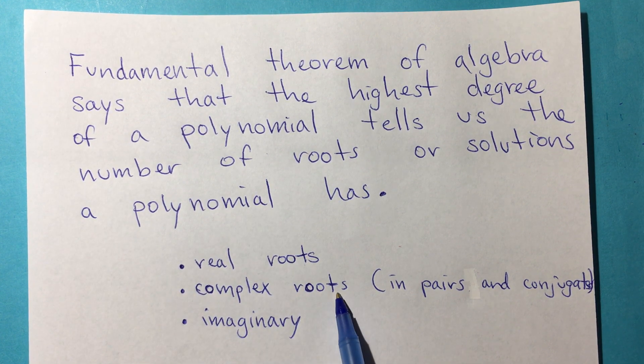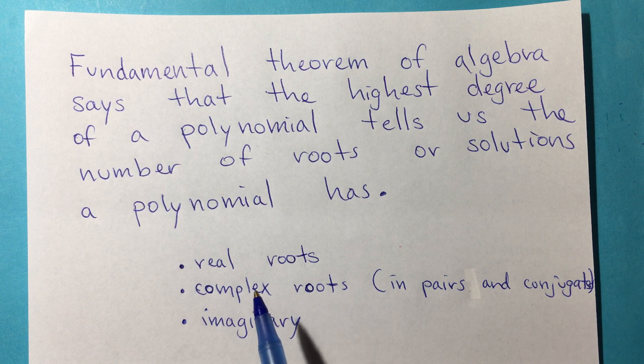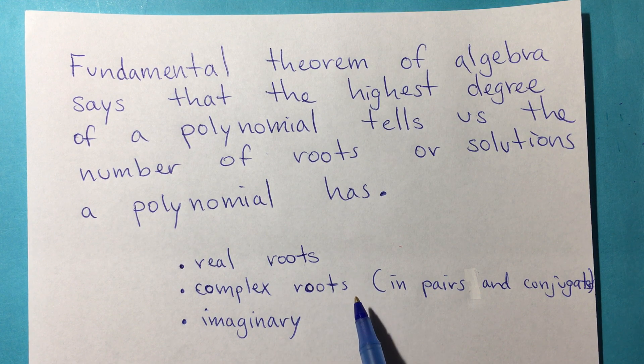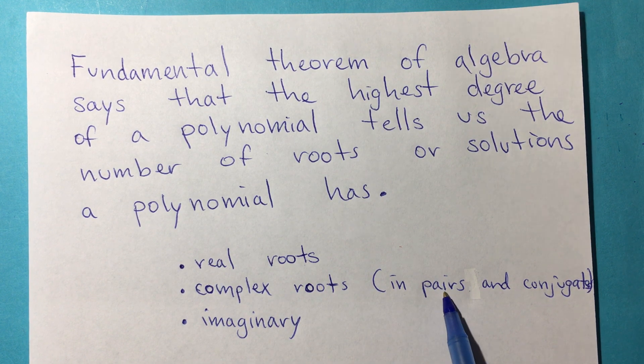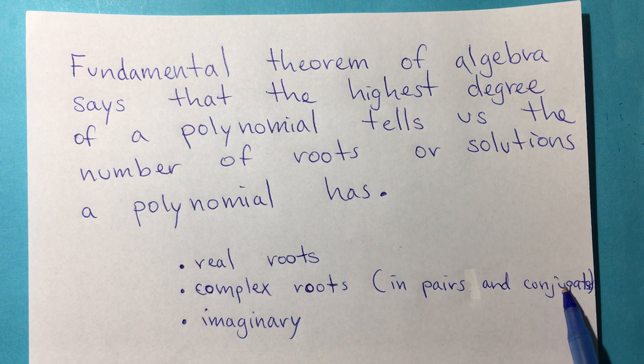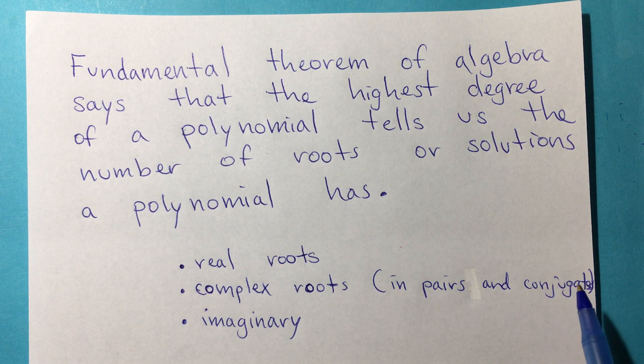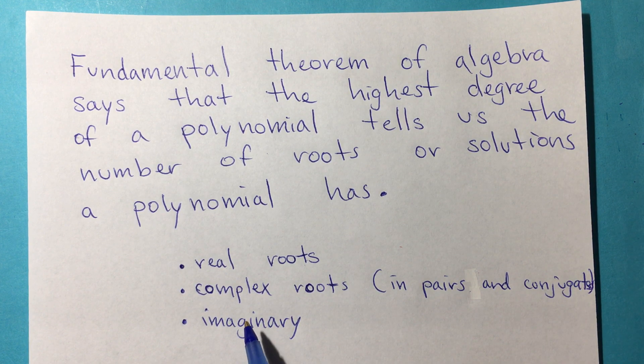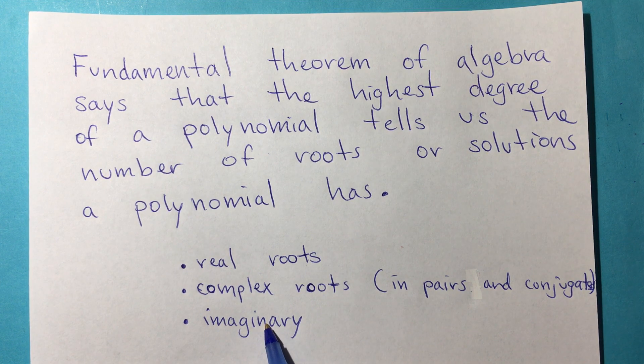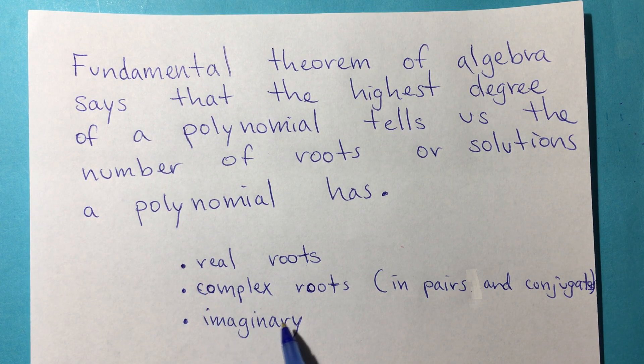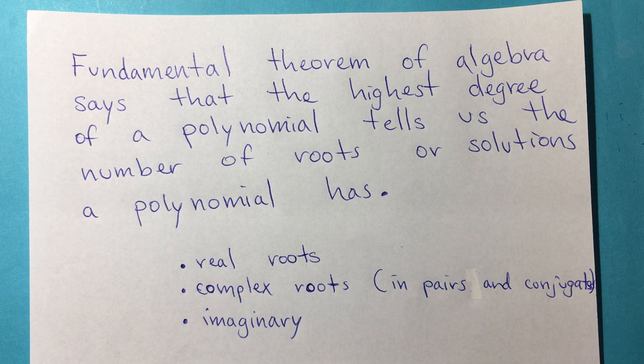Or it can be a complex root, meaning that it has a real portion and the imaginary, and they come in pairs. The pairs will always be conjugates, meaning that the sign for the imaginary portion changes. They can also just be imaginary, meaning they don't have the real portion, but just the imaginary portion.